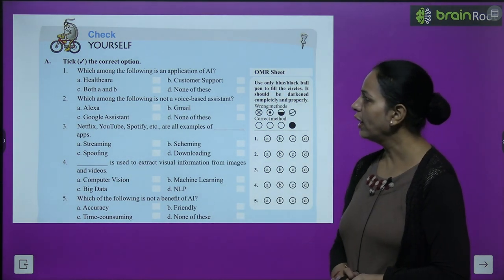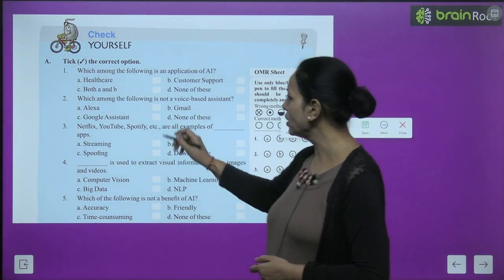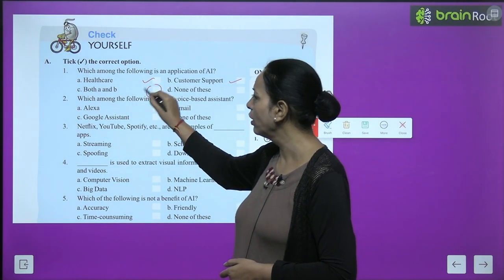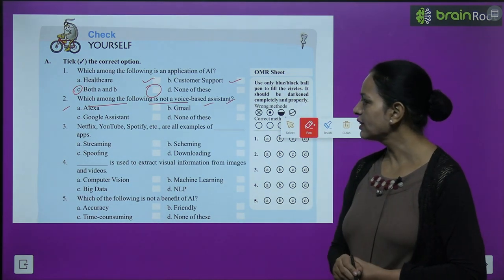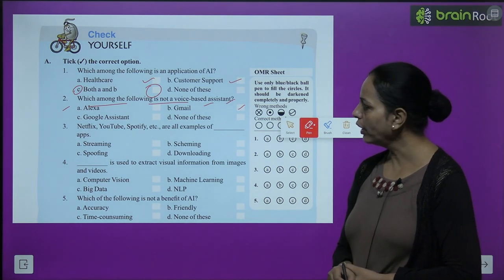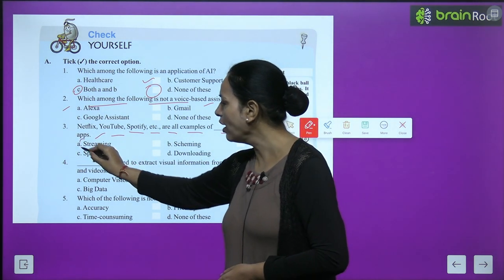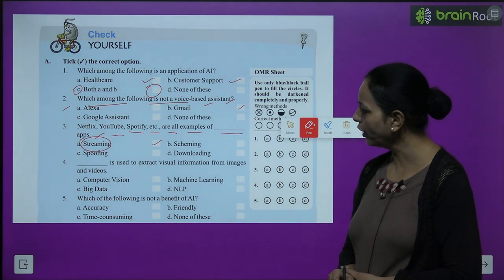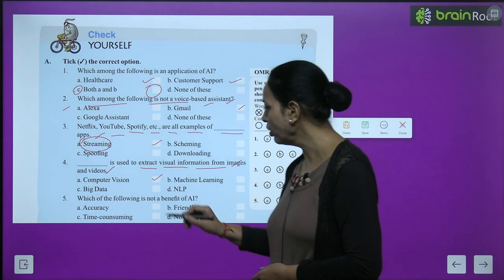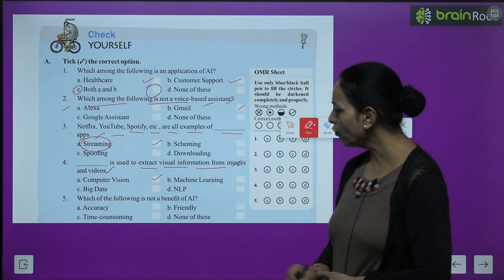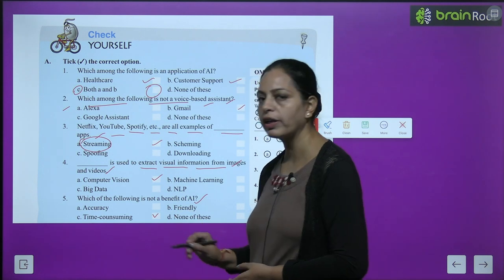Exercise — Check yourself. Part A: Choose the correct option. 1) Which among the following is an application of AI? Answer: C — both healthcare and customer support. 2) Which among the following is not a voice-based assistant? Answer: Gmail. 3) Netflix, YouTube, Spotify are examples of what type of apps? Answer: A — streaming apps. 4) What is used to extract visual information from images and videos? Answer: computer vision. 5) Which of the following is not a benefit of AI? Answer: time consuming — AI is not time consuming.